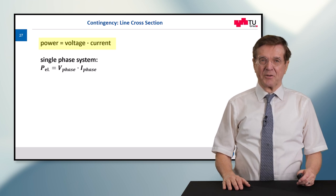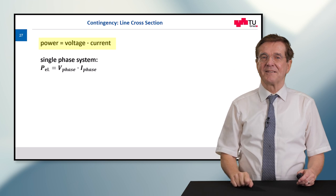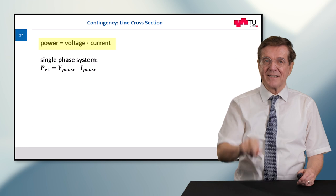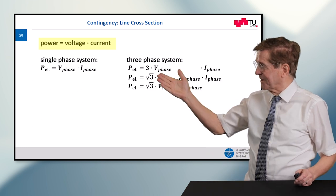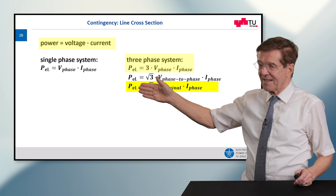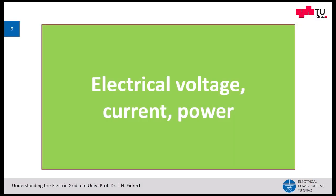What does this limitation mean for the transport capacity of overhead lines and cables? Power is the product of voltage times current. If we have a single phase system then it is the phase voltage times the phase current. If we have a three phase system we have three times as much. If you are more interested go to my lecture A2.